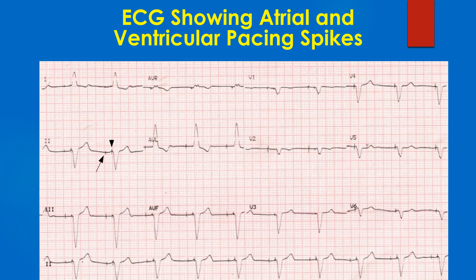This suggests a ventricular pacing site at the right ventricular apex, or right ventricular apical pacing. A similar pattern with normal QRS axis would suggest pacing from the right ventricular outflow tract region, or RVOT pacing.